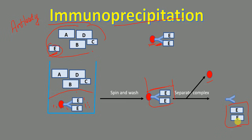To analyze and confirm that this is protein E, we can perform a western blot, which will confirm the identity of the protein. This is immunoprecipitation — we use an antibody specific for our protein of interest to isolate one protein from a mixture of proteins.